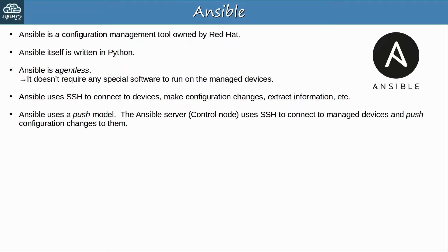Ansible also uses what's called a push model. The Ansible server — also called the control node — uses SSH to connect to managed devices and push configuration changes to them. This is different than Puppet and Chef which use a pull model, in which the managed devices connect to the server to receive their configurations.